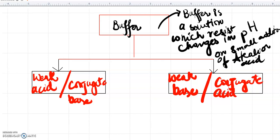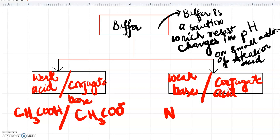For example, CH3COOH is ethanoic acid and its conjugate base is CH3COO negative. In a similar manner, this is ammonium hydroxide, a weak base, and its conjugate acid is ammonium ion.